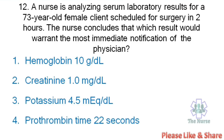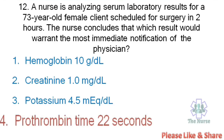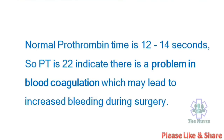Next question: A nurse is analyzing serum laboratory results for a 73-year-old female client scheduled for surgery in 2 hours. Which result would warrant the most immediate notification of the physician? Options: Hemoglobin 10 g/dL, creatinine 1 mg/dL, potassium 4 mg/dL, prothrombin time 22 seconds. Correct answer: Prothrombin time 22 seconds — that is increased. Normal prothrombin time is 12–14 seconds. A PT of 22 indicates a problem in blood coagulation which may lead to increased bleeding during surgery.